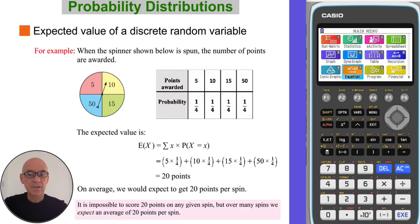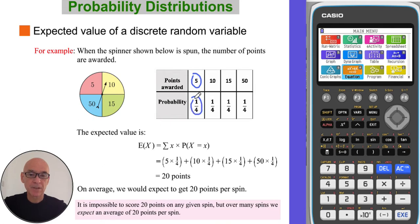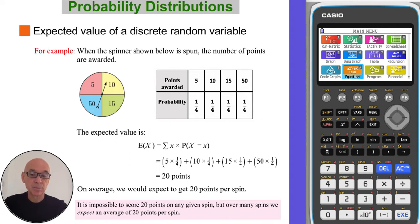In this example with a spinner of four equally likely outcomes, hence each probability of a quarter, we can find the expected number of points awarded by multiplying each number of points awarded — for example five — by its respective probability and adding up each of those calculations. So the expected value is 20 points, which means on average we would expect to get 20 points per spin.